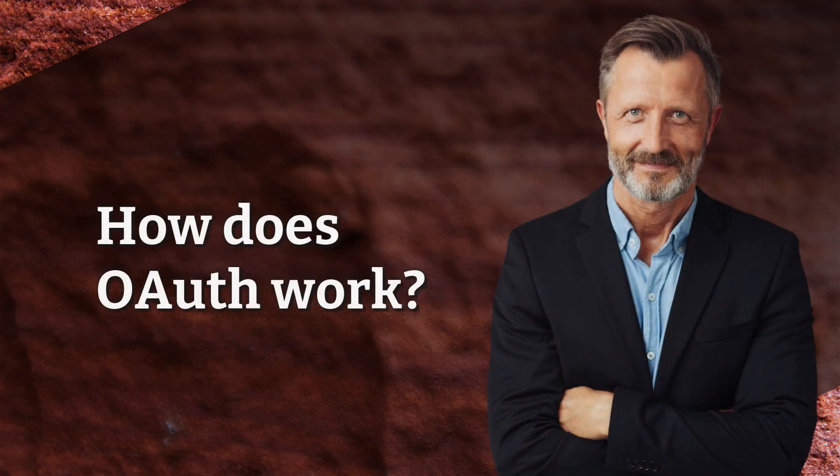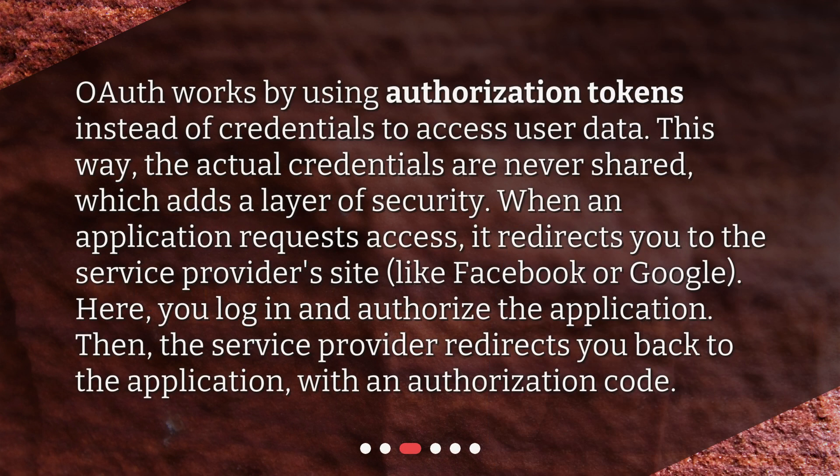How does OAuth work? OAuth works by using authorization tokens instead of credentials to access user data. This way, the actual credentials are never shared, which adds a layer of security. When an application requests access, it redirects you to the service provider's site, like Facebook or Google. Here, you log in and authorize the application. Then the service provider redirects you back to the application with an authorization code.